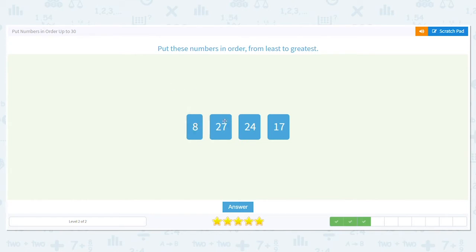Then we have 27, 24, and 17. Which one would come after that? A 17-year-old. A 17-year-old would because the teens come before the 20s. So then all we have left is 27 and 24. So which would come first between these two?